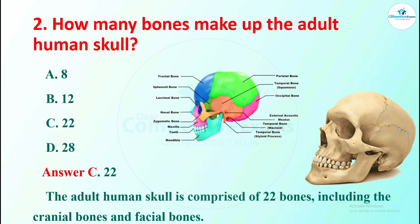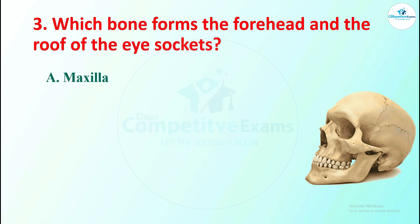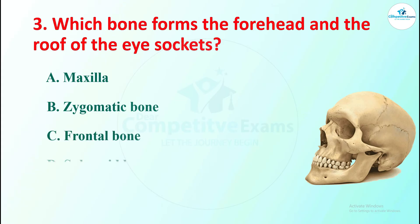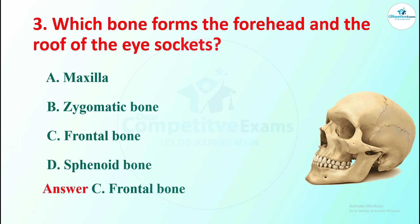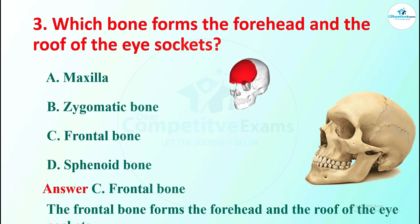The third question: which bone forms the forehead and the roof of the eye sockets? The options are maxilla, zygomatic, frontal, and sphenoid bone. The right answer is frontal bone. The frontal bone forms the forehead and the roof of the eye socket.